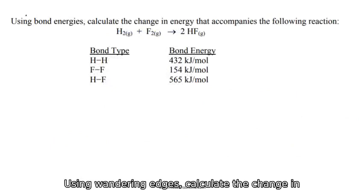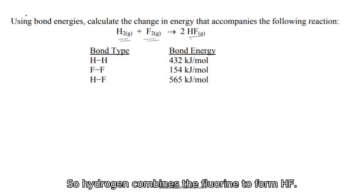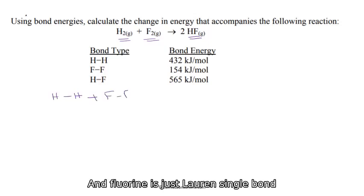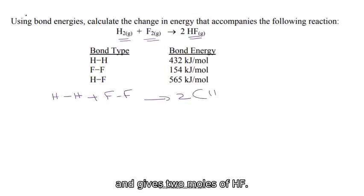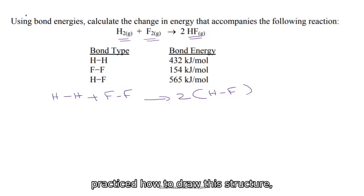Using bond energies, calculate the change in enthalpy that accompanies the following. So hydrogen combines with fluorine to form HF. So hydrogen is just H single bond H and fluorine is just fluorine single bond F and gives two moles of HF. That is the balanced chemical equation. And we know how that is going to look like. So for the test, I will be giving you this one because you haven't practiced how to draw this structure, which is called a Lewis structure that we will explain next week.